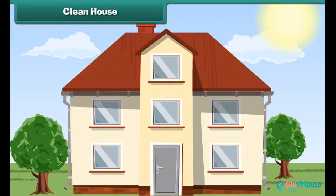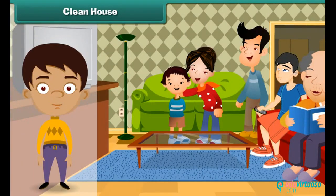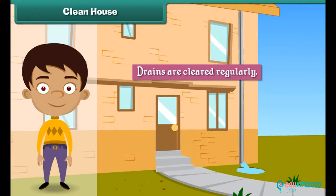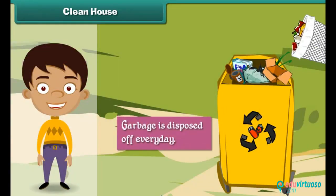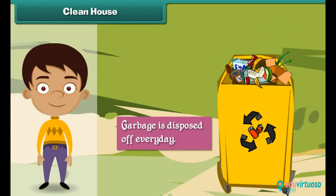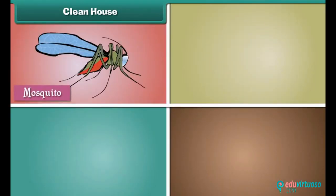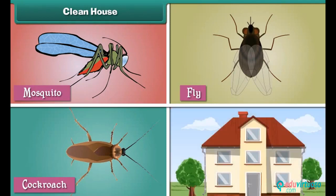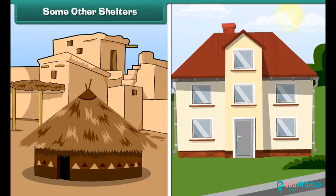We must keep our houses clean if we want to lead happy and healthy lives. We can do so by ensuring that drains are cleared regularly, garbage is disposed of every day, and insects such as mosquitoes, cockroaches, etc. do not breed in and around the house.